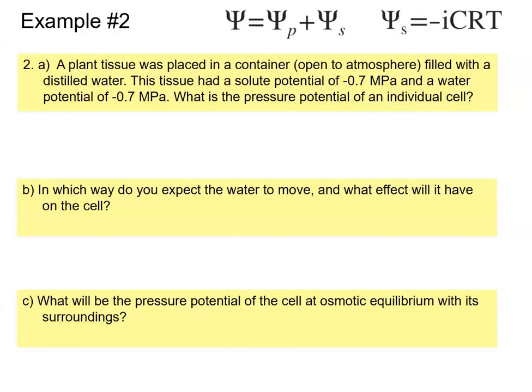In this problem, we have plant tissue placed in a container open to the atmosphere, filled with distilled water — pure water. The plant tissue has a solute potential of negative 0.7 megapascals and a water potential of negative 0.7 megapascals. We need to find the pressure potential of an individual cell.